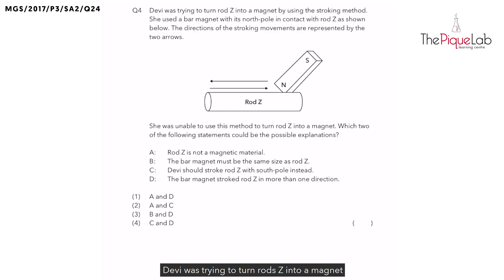Devi was trying to turn rod Z into a magnet by using the stroking method. She used a bar magnet with its north pole in contact with rod Z as shown below. The directions of the stroking movements are also represented by these two arrows here.